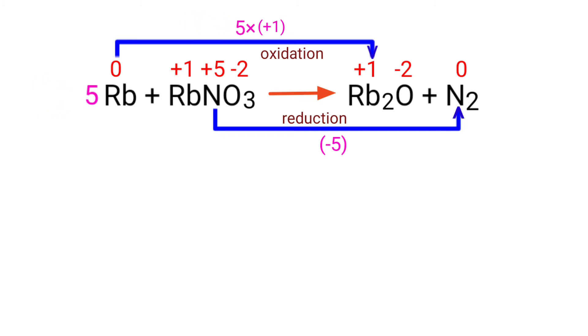Now you can write the equation as 5Rb plus RbNO3 gives us Rb2O plus N2. Now balance the number of atoms in this equation.